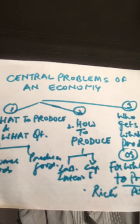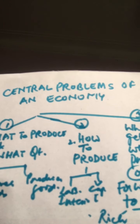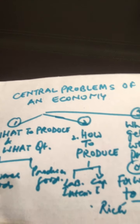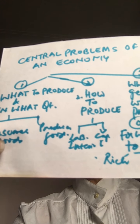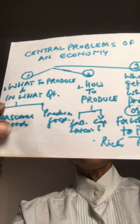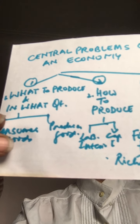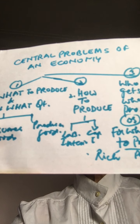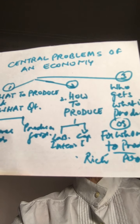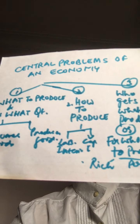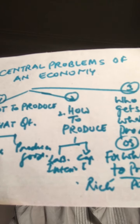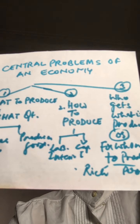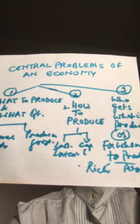The central problems are divided into three parts: what to produce and in what quantities, how to produce, and for whom to produce. Regarding what to produce — since resources are limited, we have to decide whether to produce consumer goods or producer goods, or in a war economy, wartime goods versus peacetime goods. The important thing is that it's not an either/or question; it is a combination — and in what quantities.